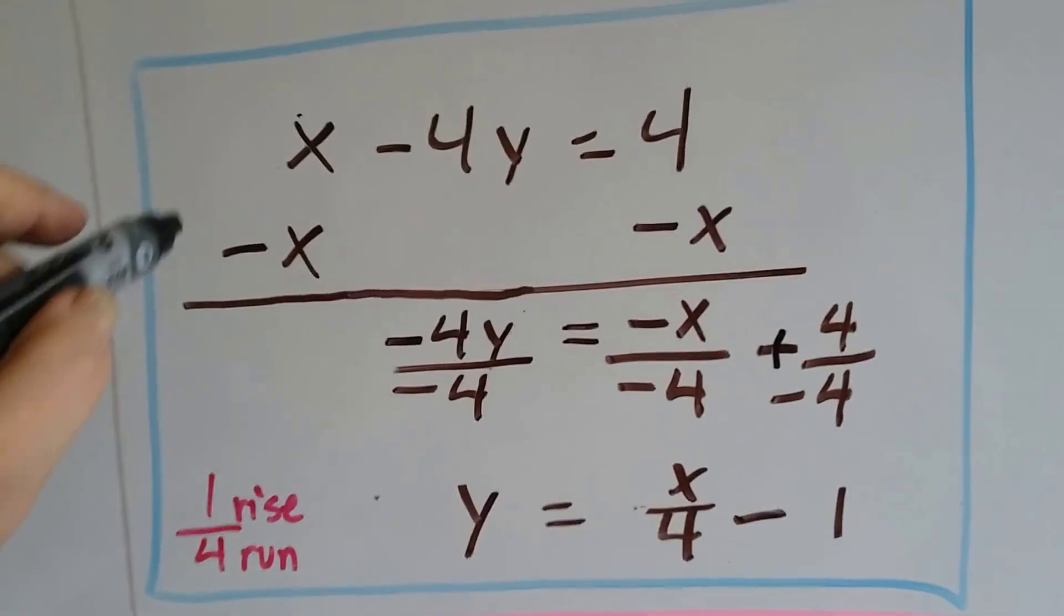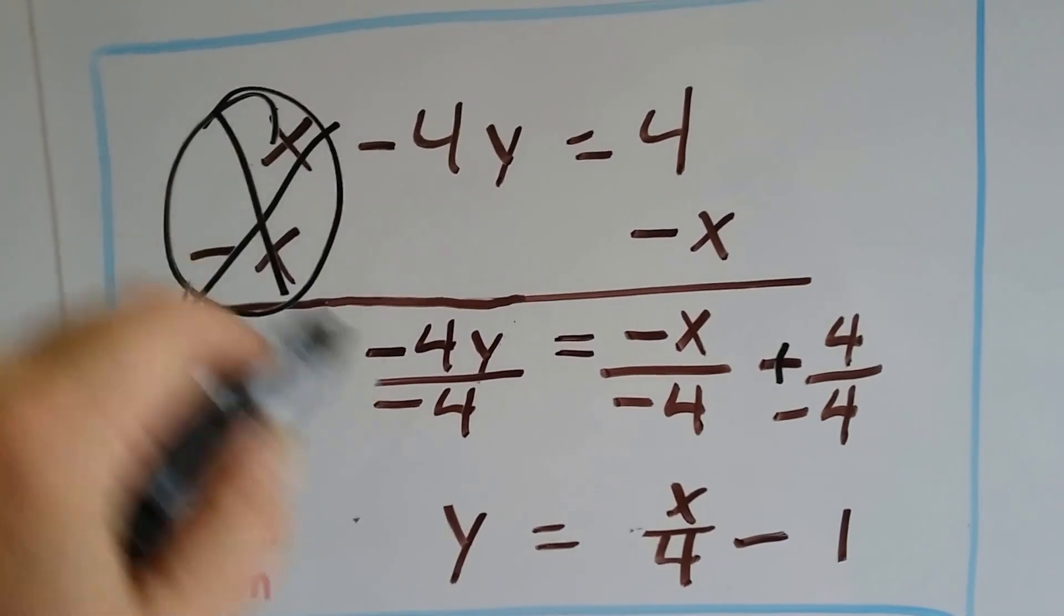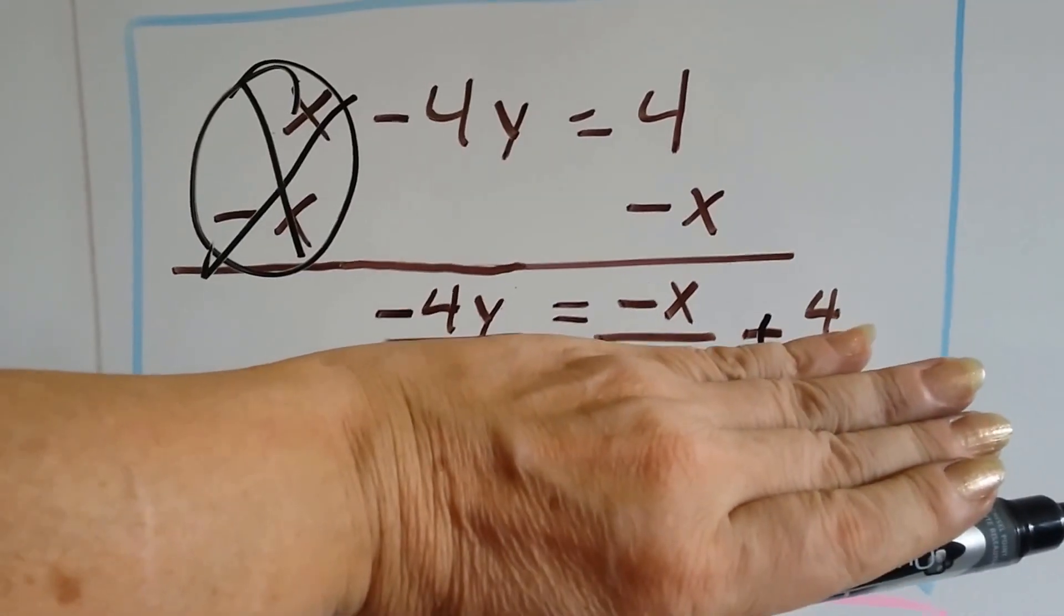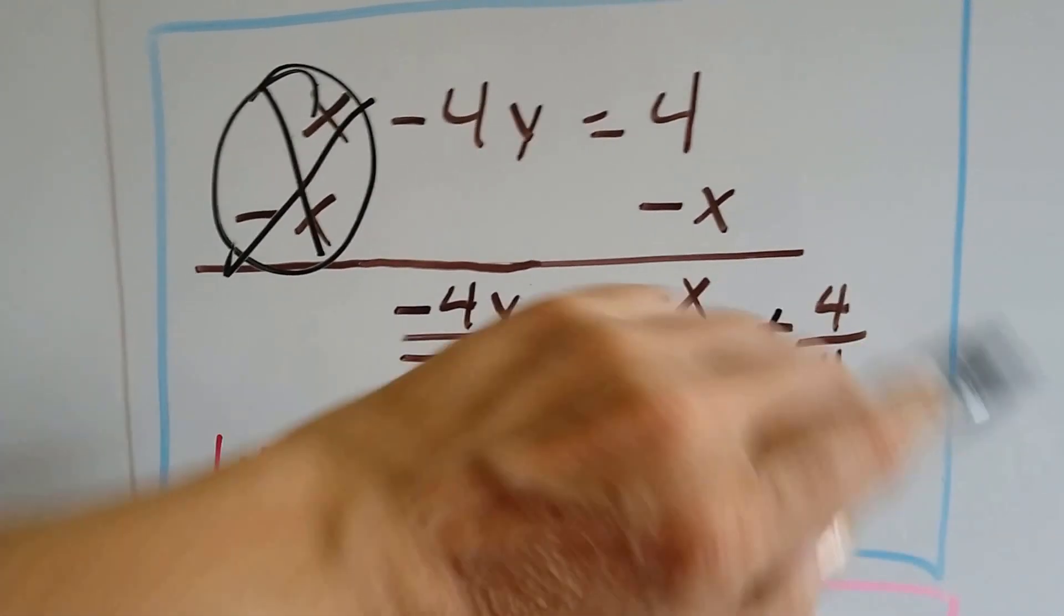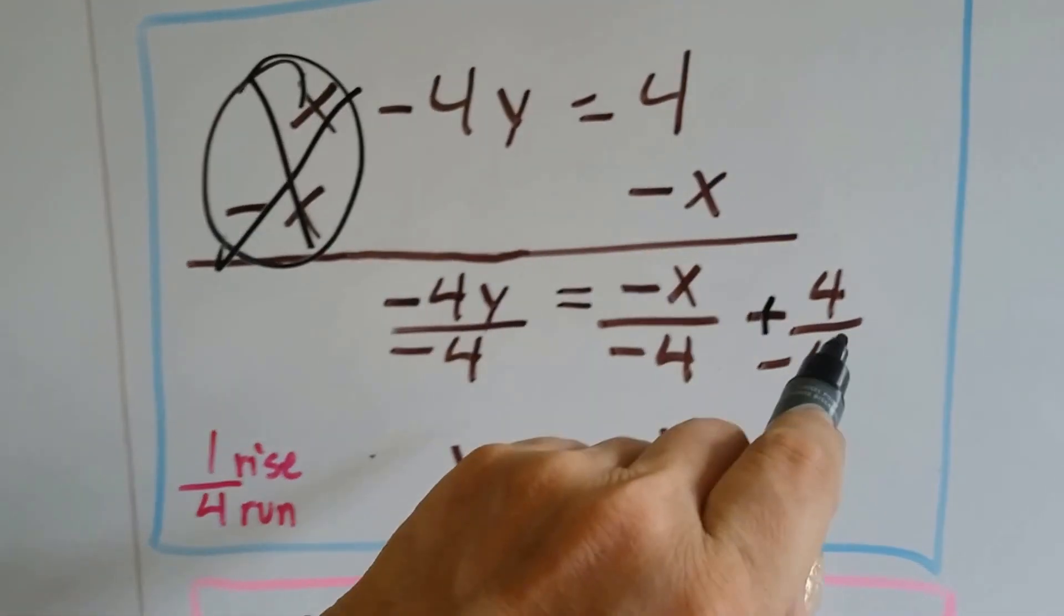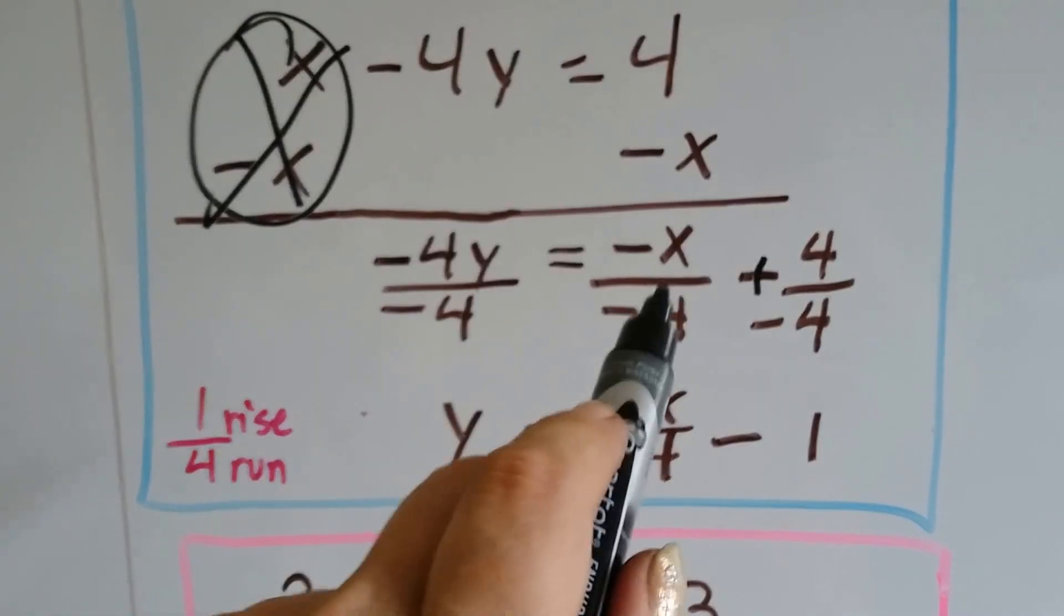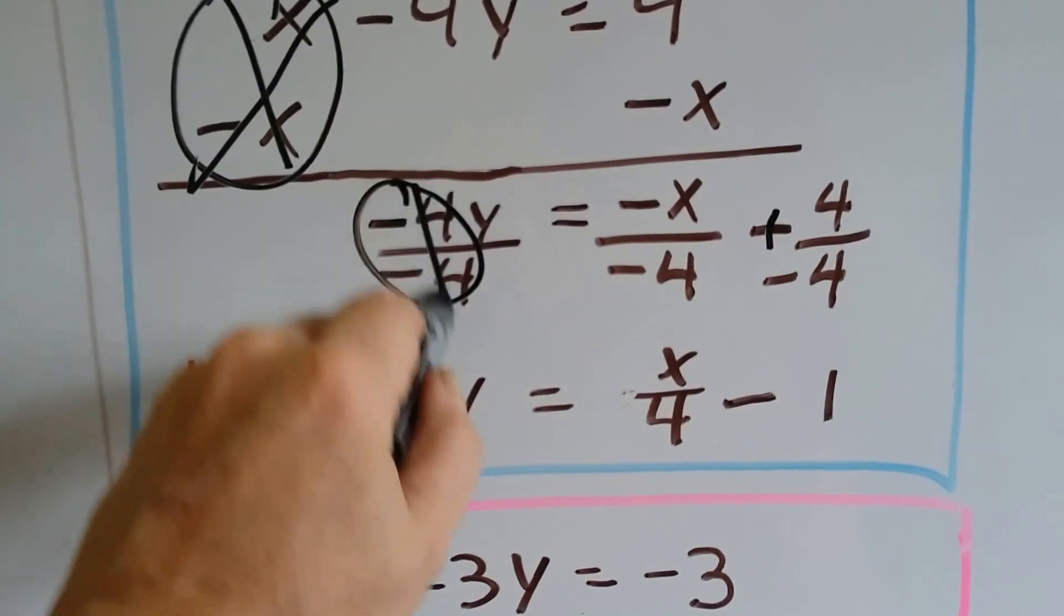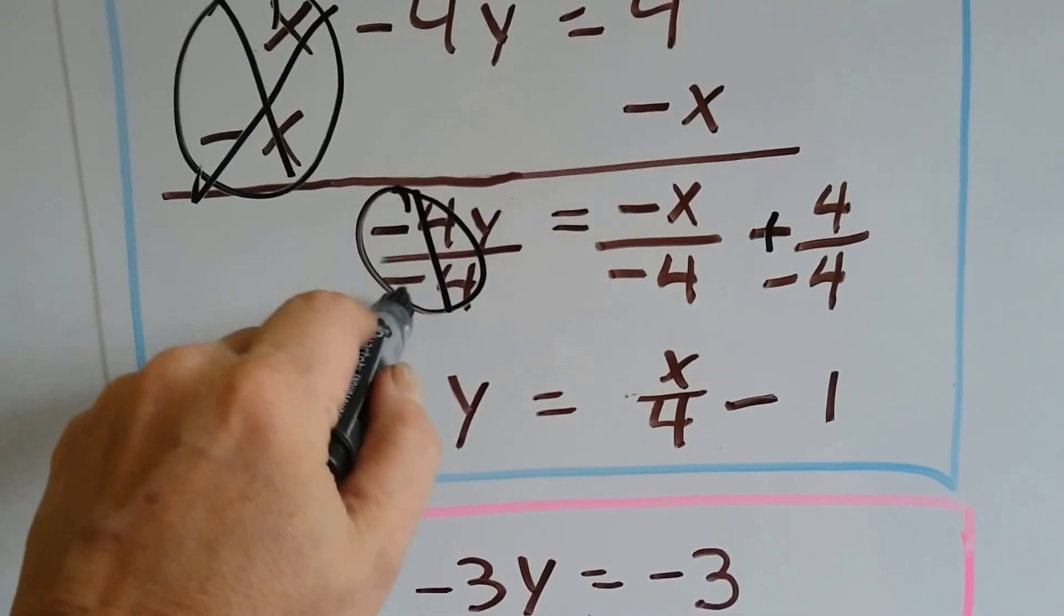So the first thing we're going to do is subtract x from each side and create a zero pair here. And now we've got minus 4y equals negative x plus 4. Now, to get this y by itself, we've got to divide each term by a negative 4. So that makes our friend the invisible 1, so y is a positive y here, because we have two negatives.